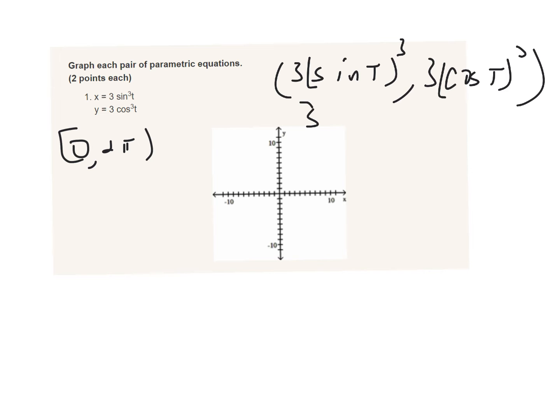So if I substitute in zero for t, three times the sine of zero cubed times three times the cosine of zero cubed. Well, sine of zero is zero, zero times three is zero. Cosine of zero is one, to the third power is one, times three is three. So when t equals zero, y equals three - one, two, three, something like that.